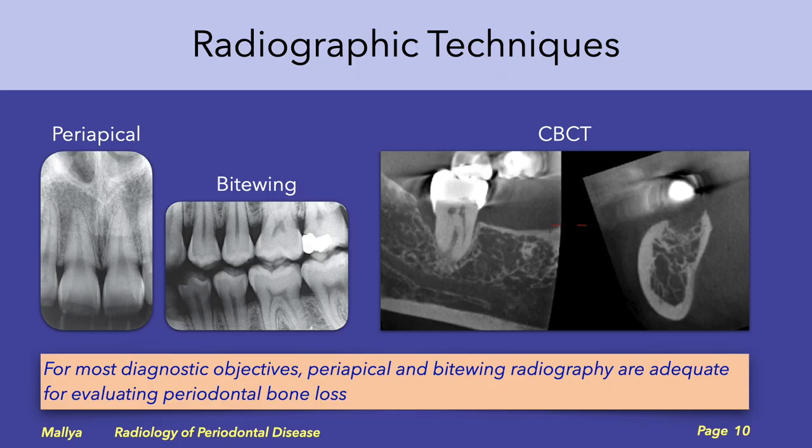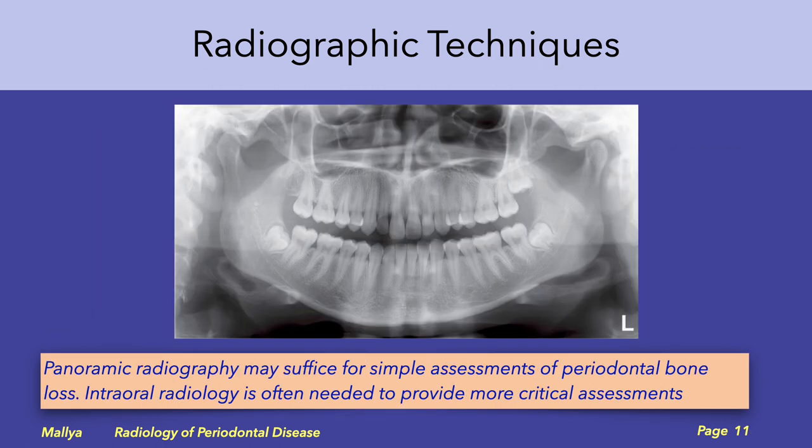Most of these diagnostic objectives can be accomplished with periapical and bitewing radiography. In a small subset of cases, we will use cone beam computed tomography to characterize the bony changes in three dimensions. Panoramic radiography may be adequate to provide a simple assessment of the periodontal bone level; however, intraoral radiography is typically performed when more critical assessment is needed.